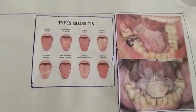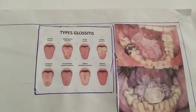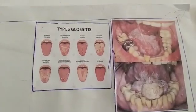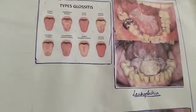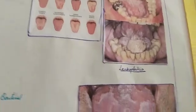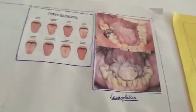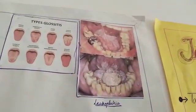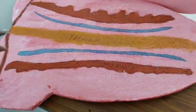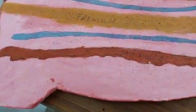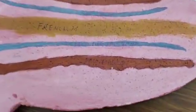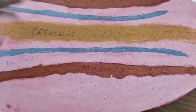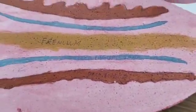Glossitis is a swollen, inflamed tongue, which comes in many types. Main causes include vitamin B3 deficiencies and nutritional deficiencies, and sometimes viral, fungal, and bacterial infections. Leukoplakia is another clinical condition. The inferior most part of the tongue shows the frenulum and deep lingual veins, along with the plica fimbriata, medially fimbriata.